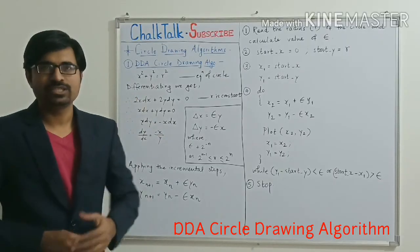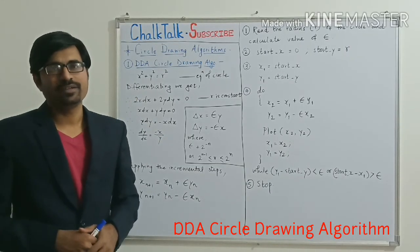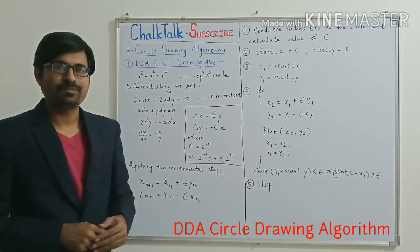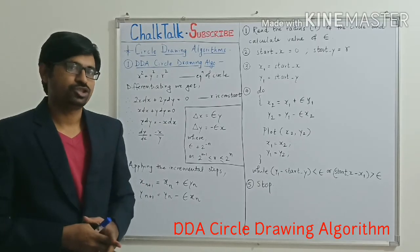DDA stands for digital differential analyzer. As circle is a symmetric figure, this algorithm gives you the entire circle. Whereas in terms of Bresenham, it gives only one-eighth portion of the circle.